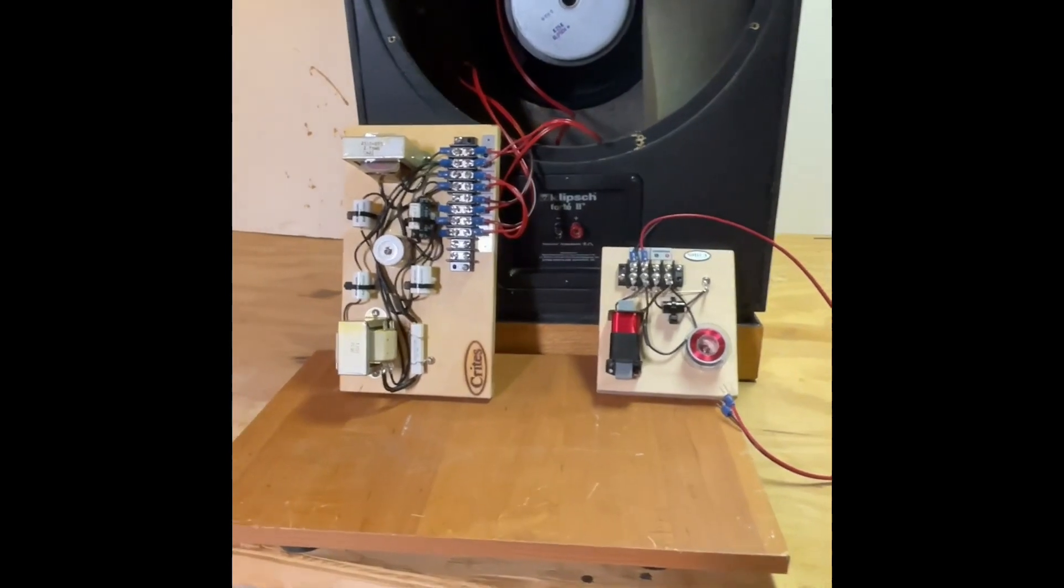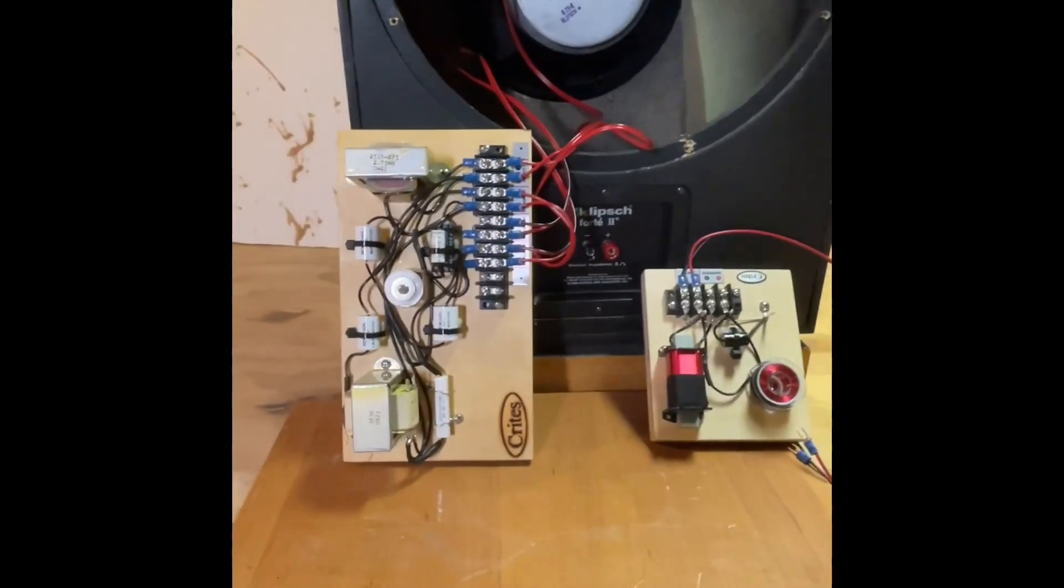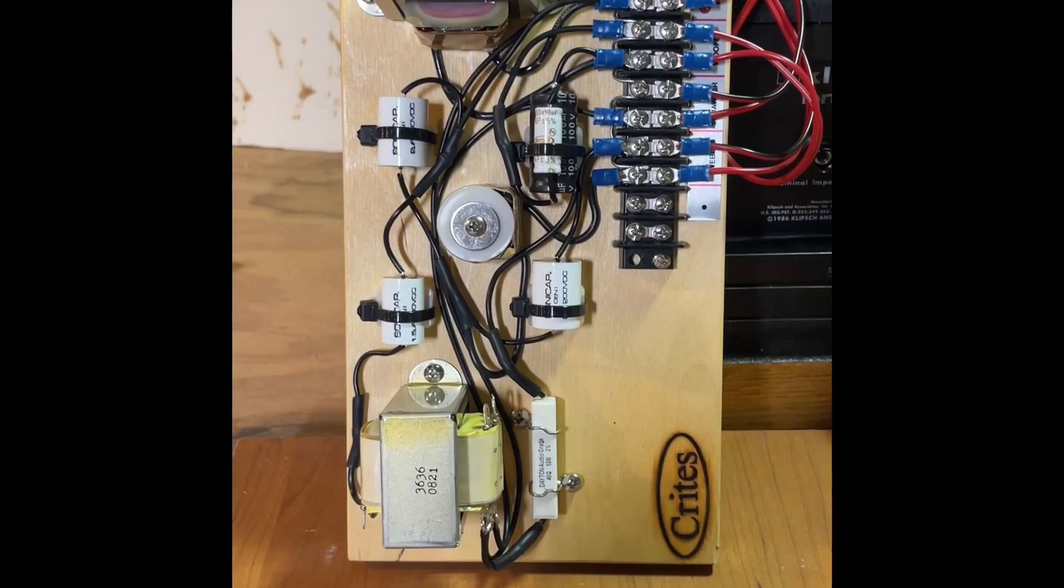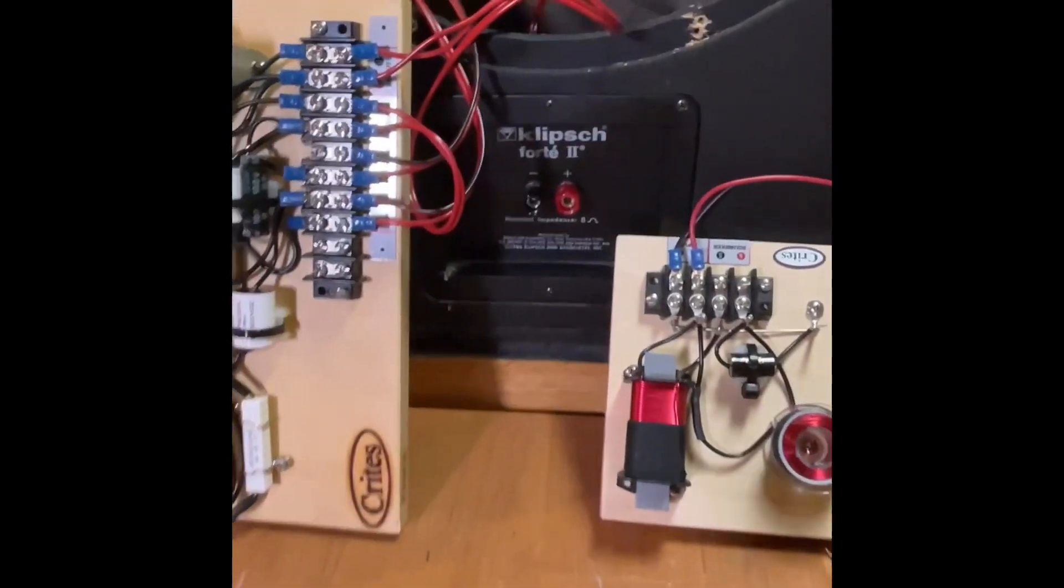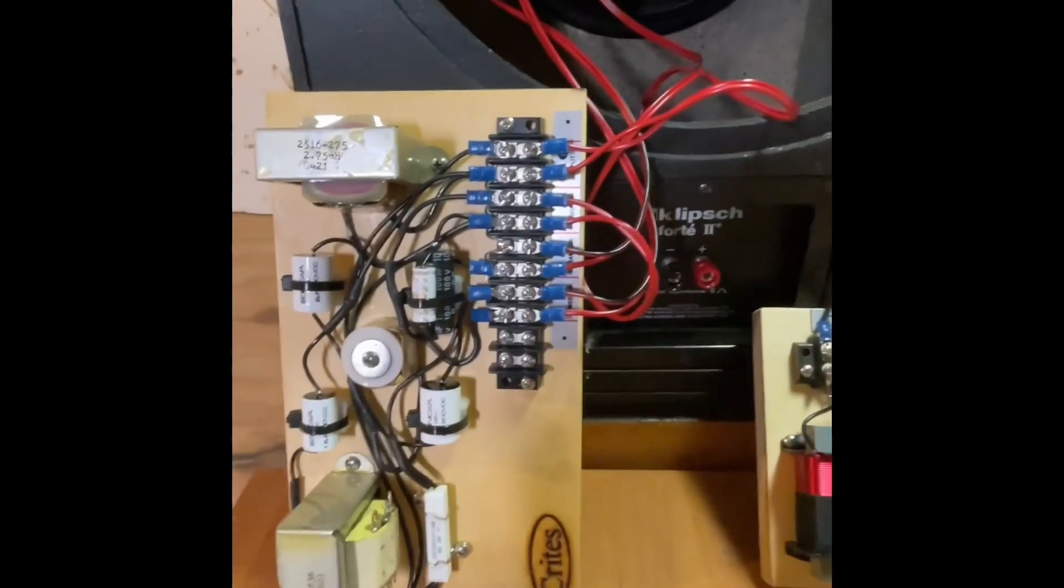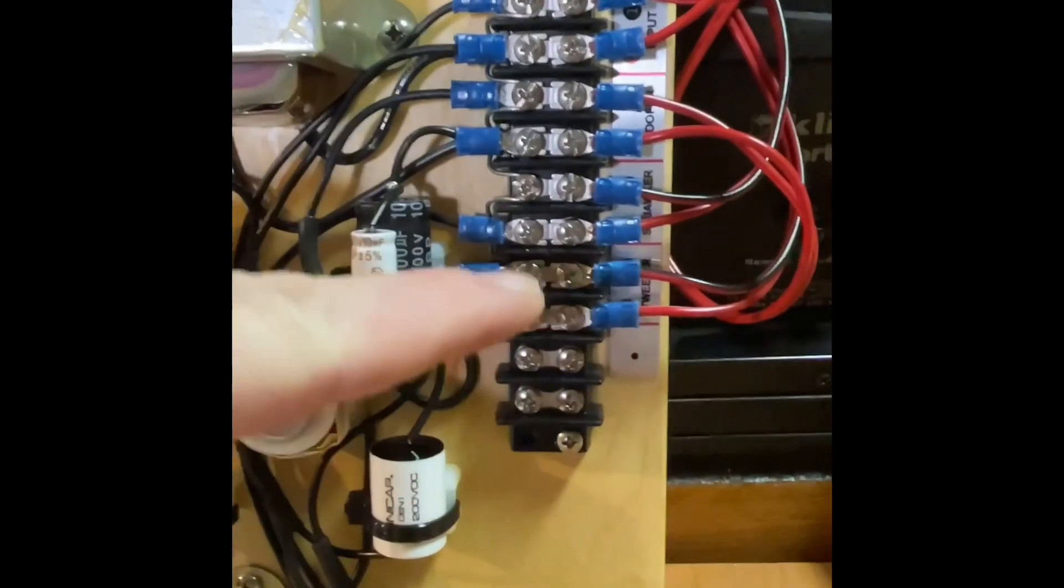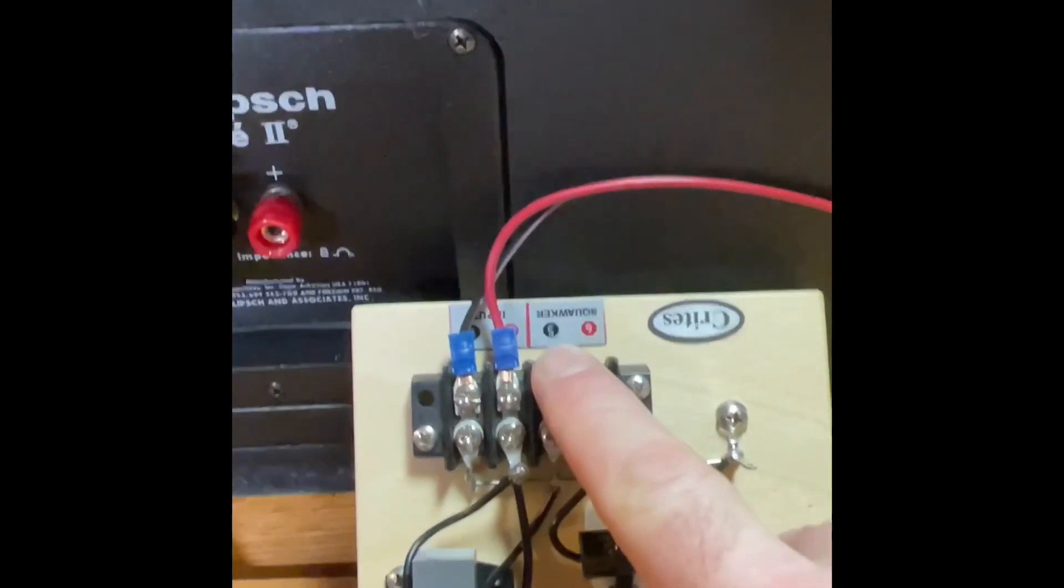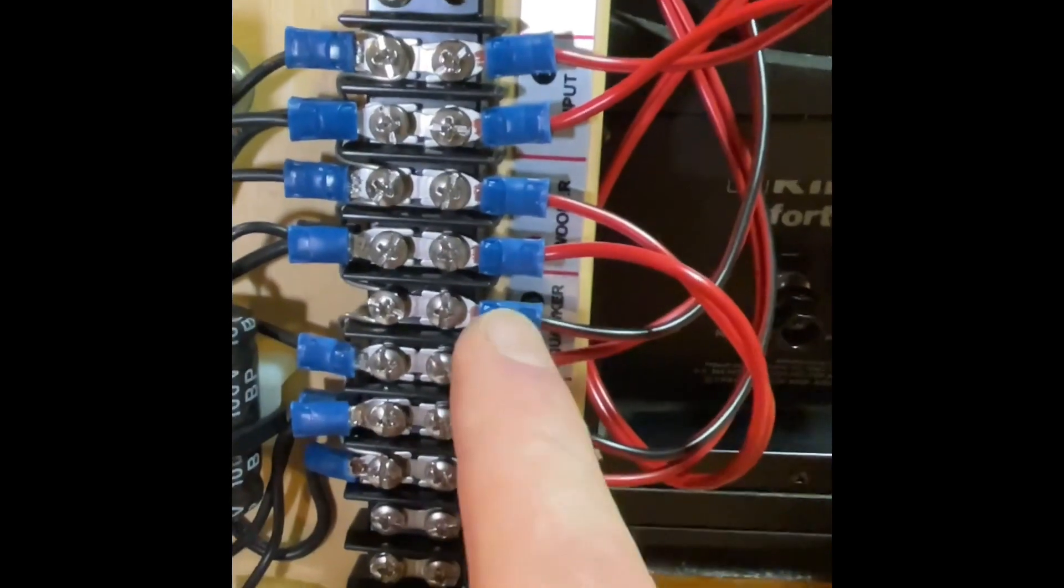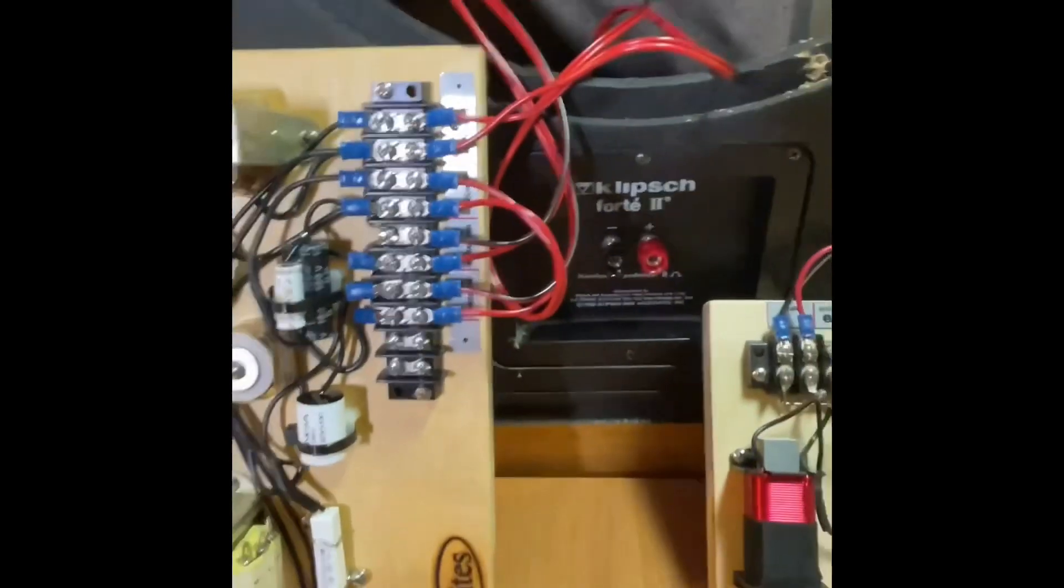So, alright, here's the bandpass filter with the Krites crossover for the Forte 2. That's the crossover right there. There's the bandpass filter right there. So what we're going to be doing is we're going to be disconnecting the squawker wires right here. And we're going to be running those over to the squawker here. And we're going to take these wires here and run them over to the squawker connection here. And that will put the bandpass filter in between the crossover and the actual squawker.